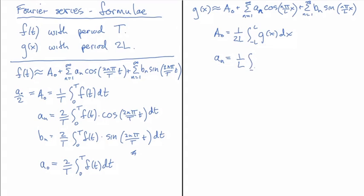And then I'm going to integrate again from minus L to L, g(x), and now I'm going to multiply by the cosine n pi over L, x, dx.